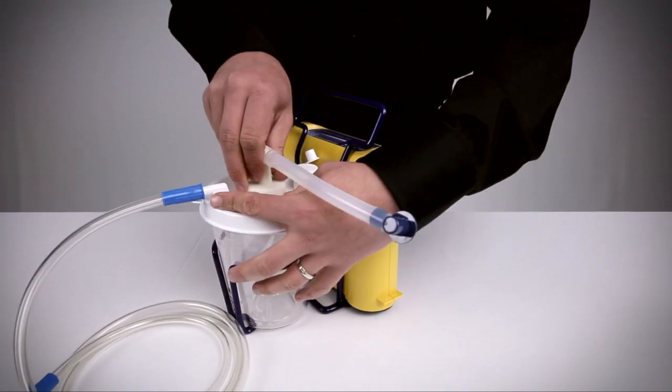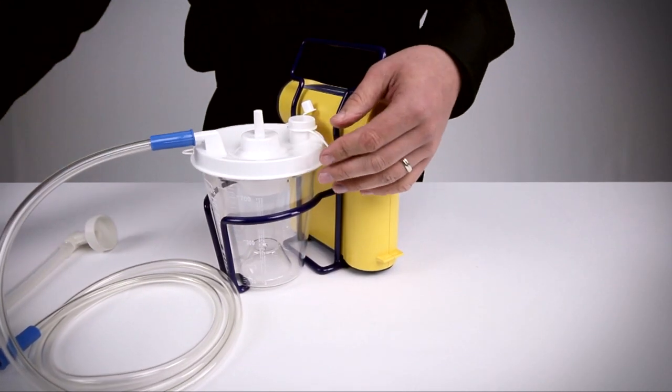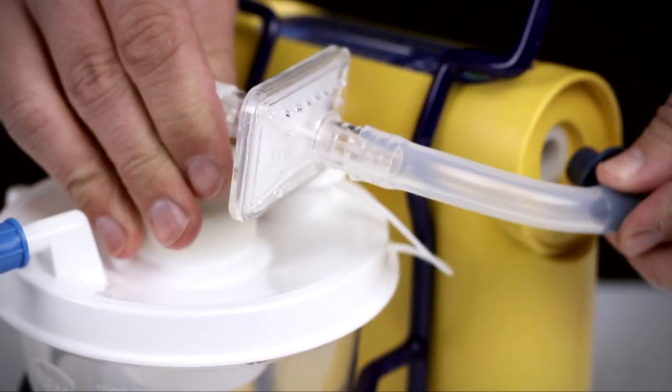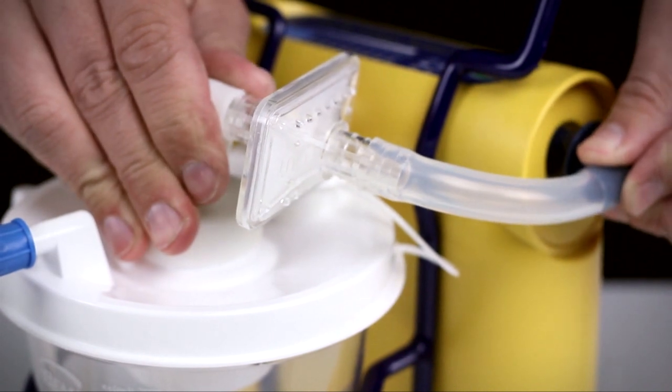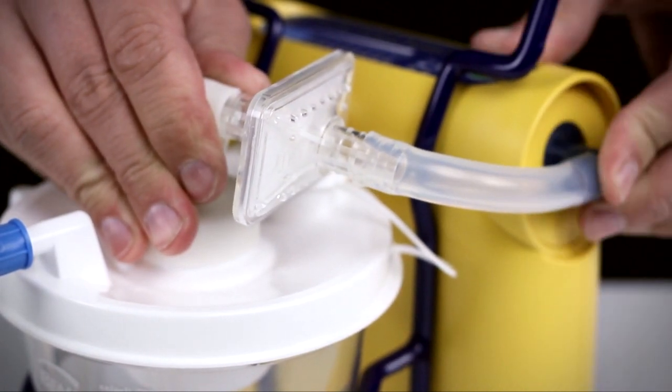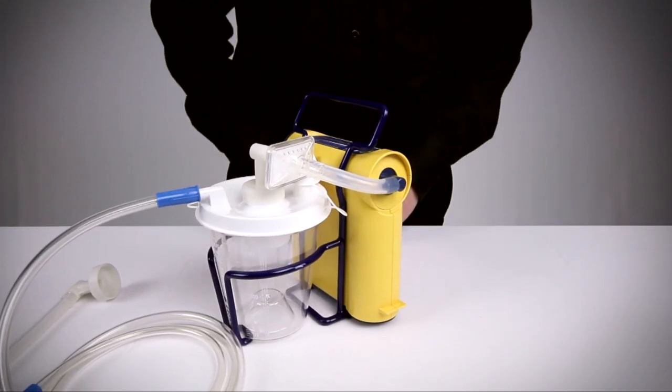To increase filtration efficiency, the vacuum tube may be replaced with a high-efficiency filter kit. The unit will then run with two filters, one integrated in the lid and one on the tube.